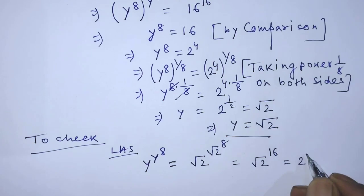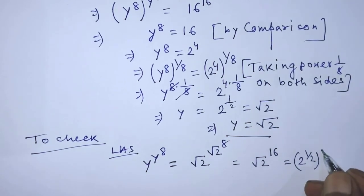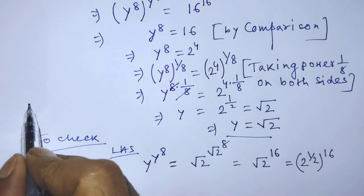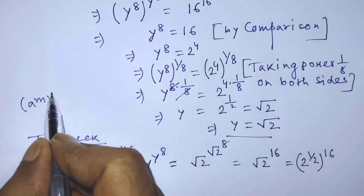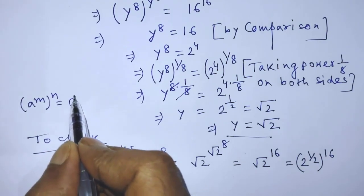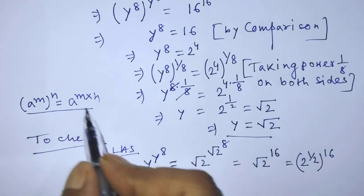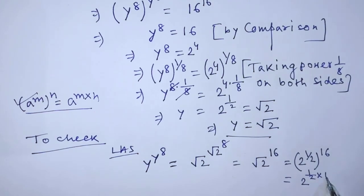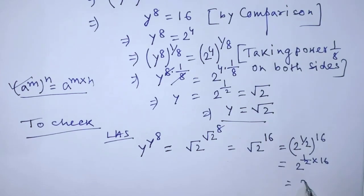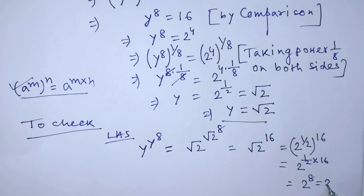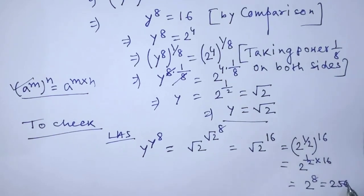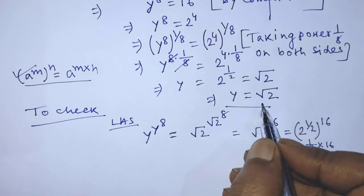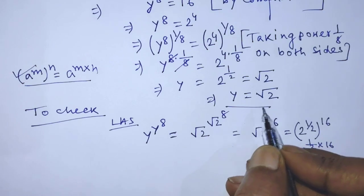It will be 2 to the power half, whole to the power 16. To simplify this, we apply the formula a to the power m, whole to the power n, equals a to the power m times n. So we get 2 to the power 1 over 2 times 16, which is 2 to the power 8, that is 256, which is the right hand side. The value of the left hand side and right hand side are both equal, meaning y equals square root of 2 is the correct solution of the given equation.